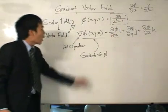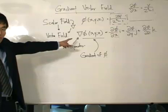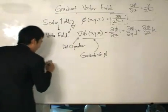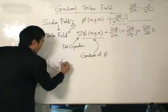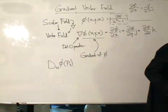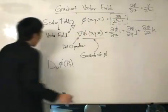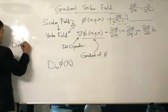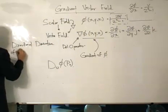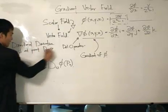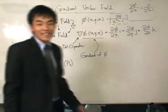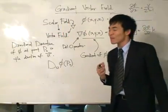Now we have the gradient of phi, and our first interpretation of how the gradient of phi is used is in what we call the directional derivative. We write this as D_u of phi at the point P naught — the directional derivative of phi at point P naught in the direction of vector u. That is again such a big concept, but I'm really trying my best to make it as simple as possible.